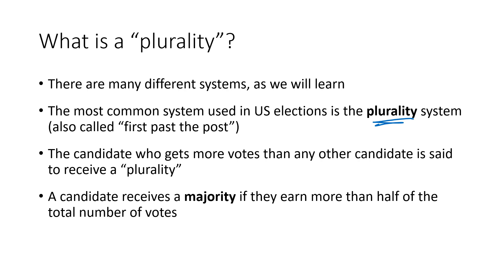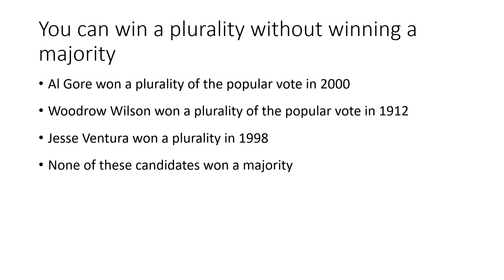A candidate receives a majority if they earn more than half of the total number of votes. And those aren't quite the same thing. You can win a plurality — you can get more votes than everybody else — without winning a majority. We already saw in the previous lecture several examples from historical elections where the winner got more votes than everybody else but didn't win more than half the votes. So it's important to understand the difference between plurality and majority.